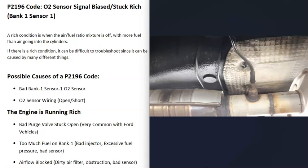If the sensor tests good and there are no wiring problems, then very likely the engine does have an actual rich running condition. This can be difficult to troubleshoot since it can be caused by many different things. If you're also getting other codes like a MAP sensor code or a fuel injector code, pay attention to those since they can help point you to the problem.